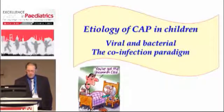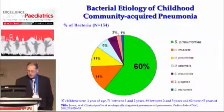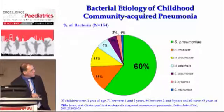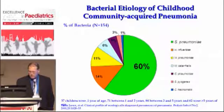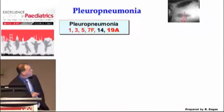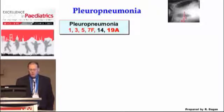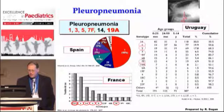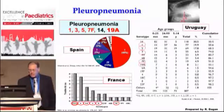What are the etiologies for community-acquired pneumonia in children? I'll focus on the co-infection of viral and bacterial. It is well established that pneumococcus is the most common cause of pneumonia. In this study, 60% of all bacterial causes are related to pneumococcus, followed by Haemophilus influenzae and others. The most common serotypes are 1, 3, 5, 7F, 14, and 19A — all in red belong or are included in the 13-valent vaccine. In complicated pneumonia, pleural pneumonia and others, these serotypes are the most common causes.